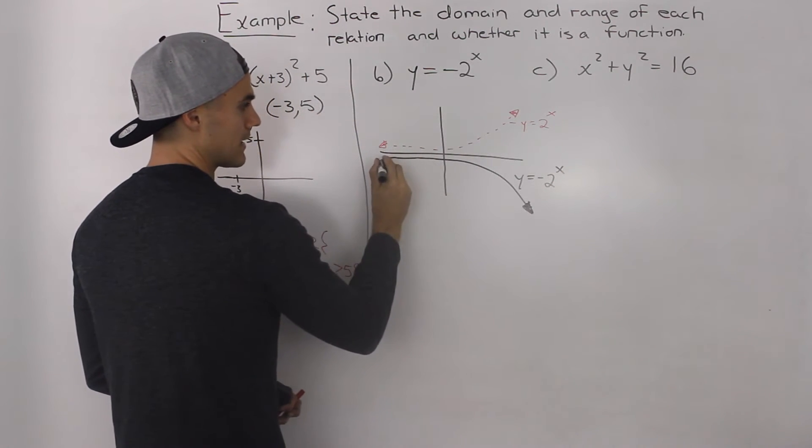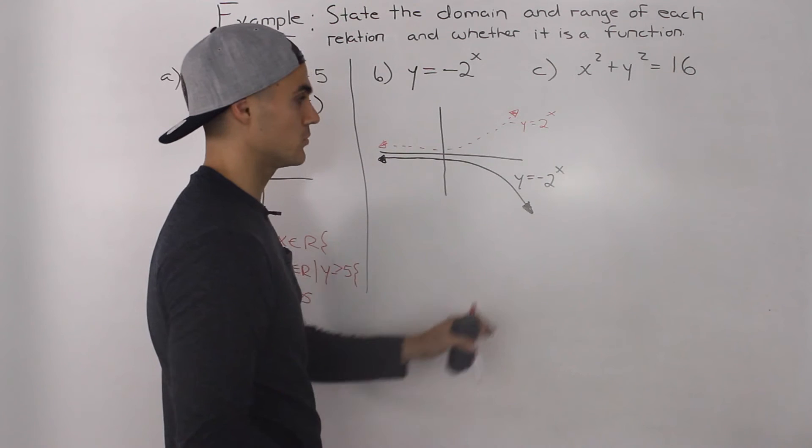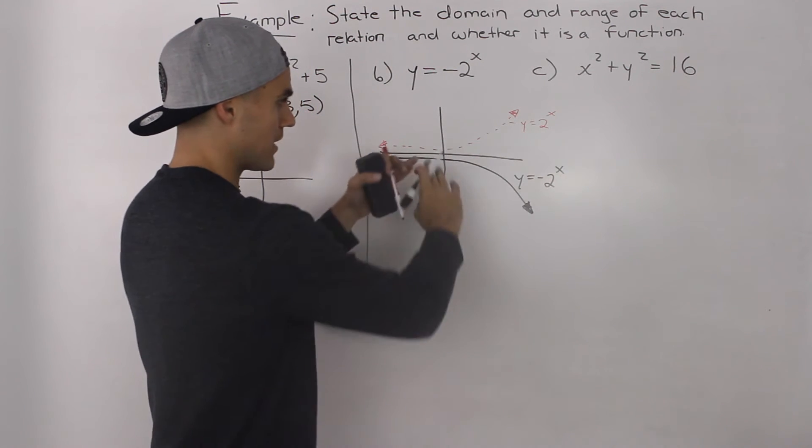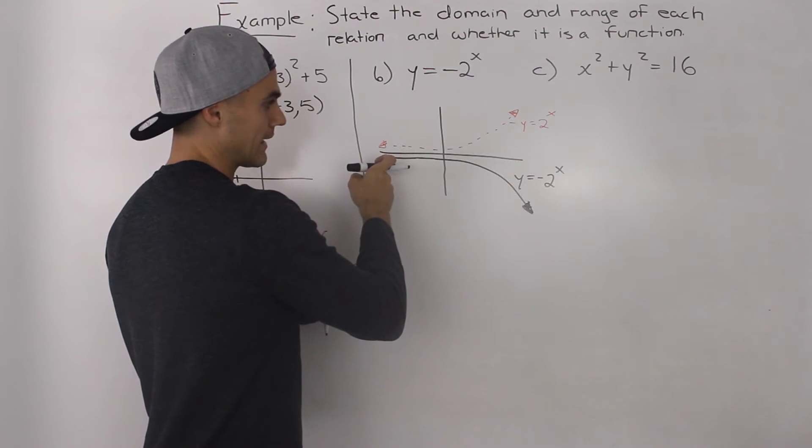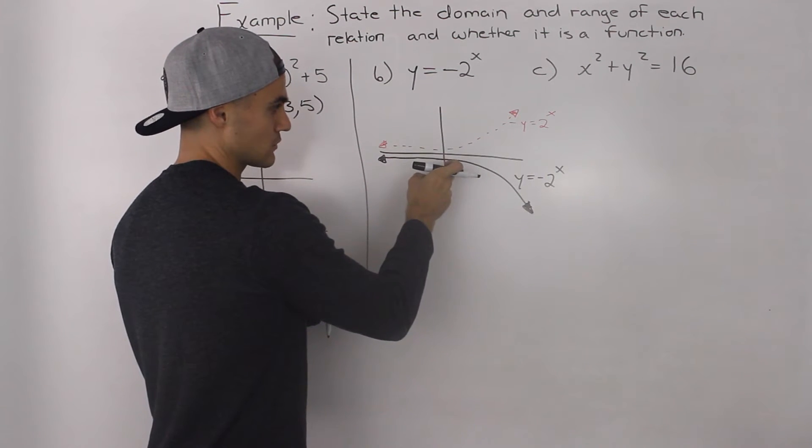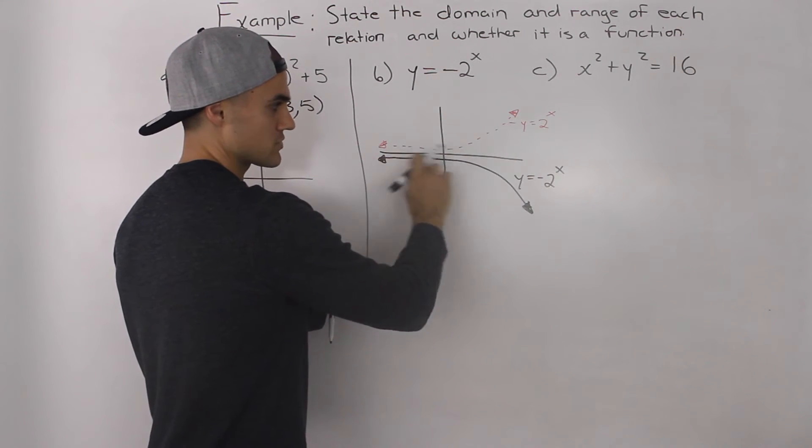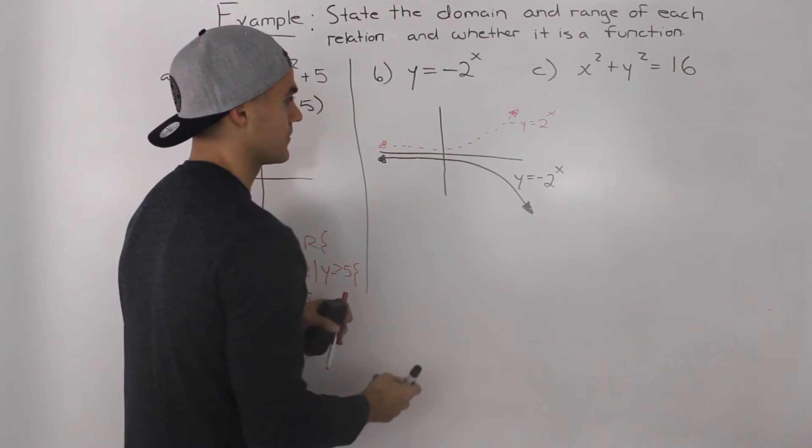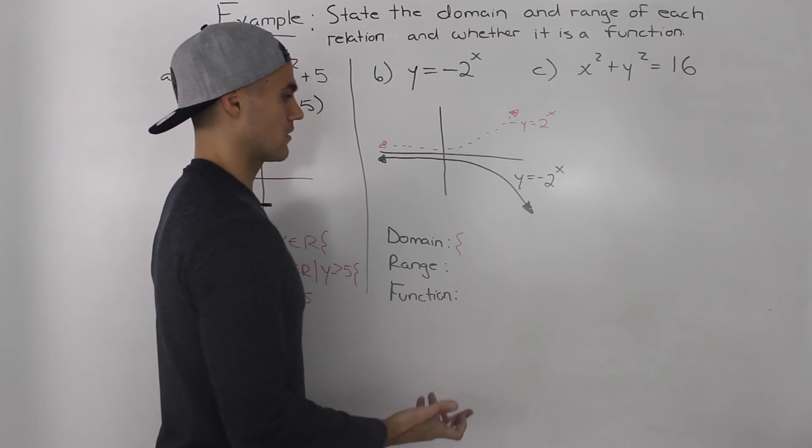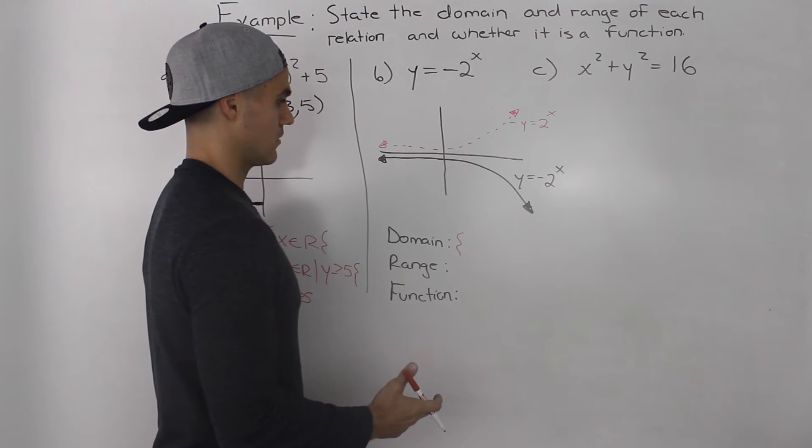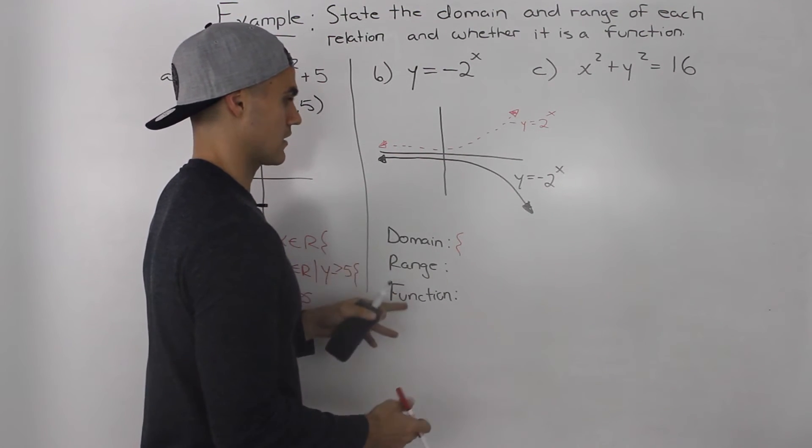Again, you can make a table of values if you want, if you feel more comfortable doing so. Pick a bunch of x values from maybe like negative 100, negative 10, 0, 10, and 100, and you'll see that it takes this shape. And now that we have the graph of y is equal to negative 2 to the power of x, notice how it's easy to find the domain and range.